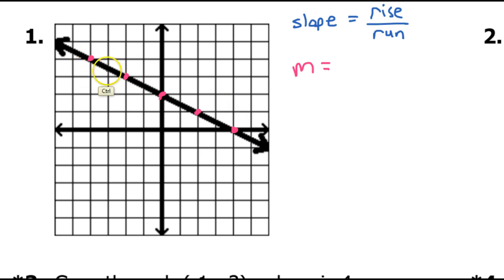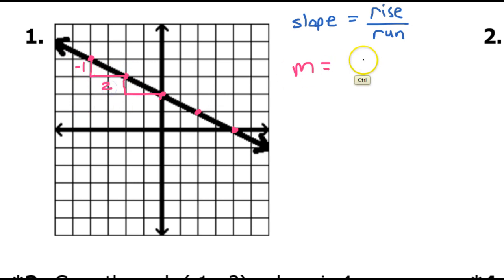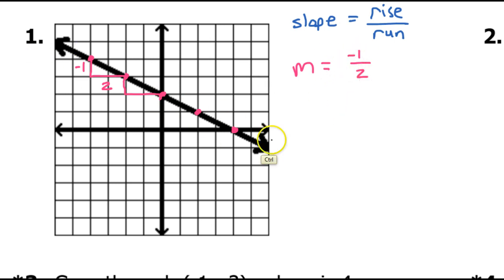As I go from left to right, you can see that what's happening is I'm going down 1, right 2. Down 1, right 2. That down 1 is the rise, so the rise is negative 1. The right 2 is the run. So that's why the slope, m, is going to be negative 1 over 2. Notice that a negative slope is always going to be downhill from left to right. So we know one of the two things we need — we know the slope.